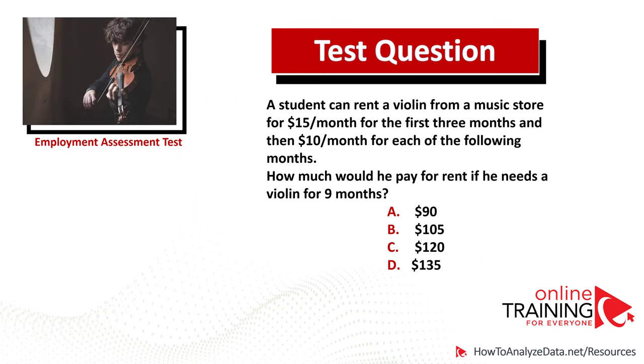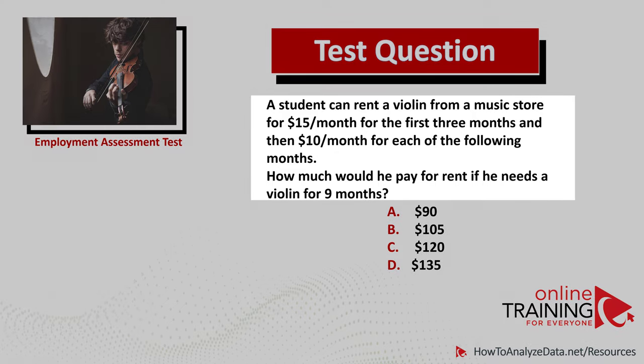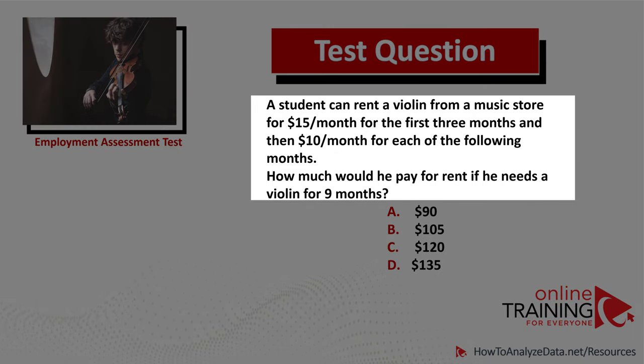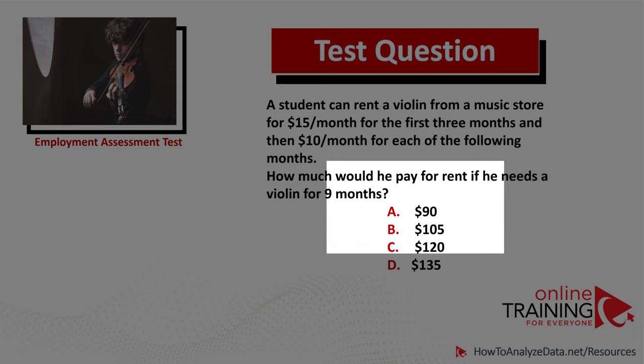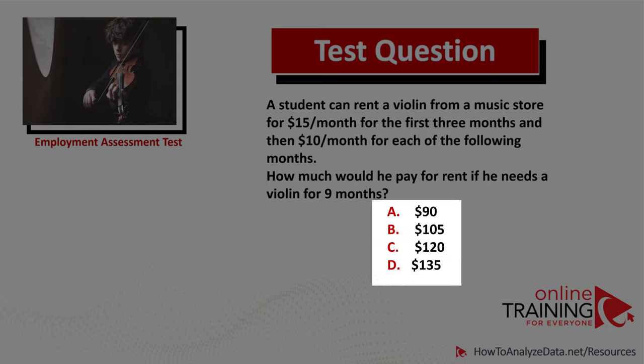Let's look at an interesting question you might see as part of an employment assessment test. A student can rent a violin from a music store for $15 a month for the first 3 months, and then $10 a month for each of the following months. How much would he pay for rent if he needs a violin for 9 months? You have 4 choices: $90, $105, $120, and $135.